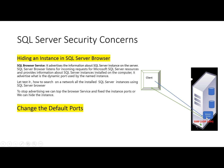The browser service advertises all the instances installed on a machine, giving information about instances that anyone on the network can discover. So we have to hide this information. One way is to stop the browser service, but then clients will not be able to connect to named instances using dynamic ports. So the other way is to hide the instances so the information is not populated or shown on the network.